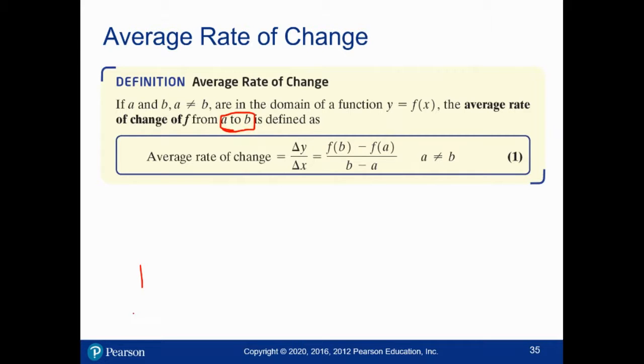If I have a function that starts at x equals A and ends at x equals B and it does something or other, this point here is at B comma F of B, this point here is at A comma F of A, and if I compute F of B minus F of A over B minus A, that is called the average rate of change of a function.